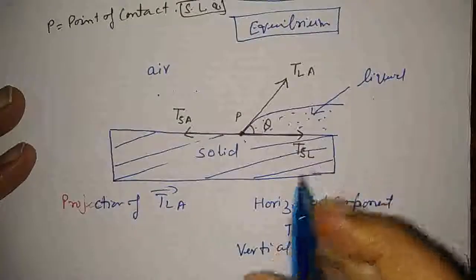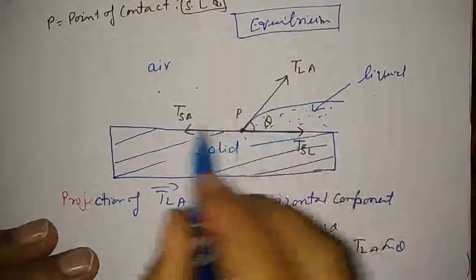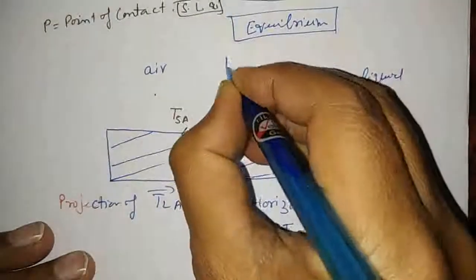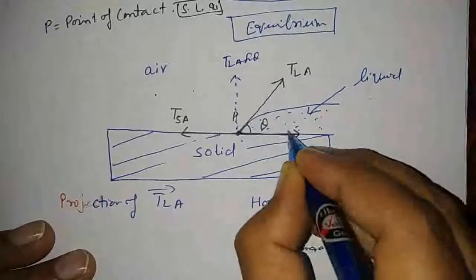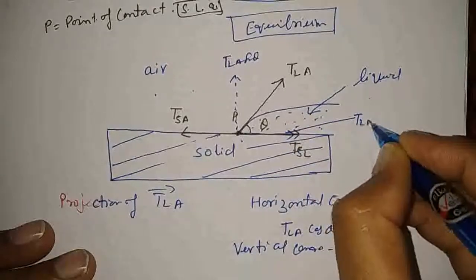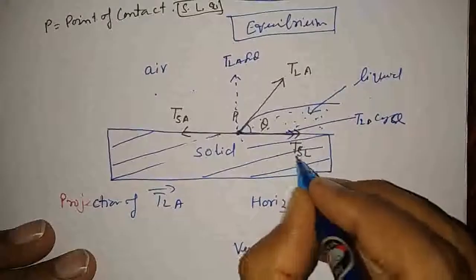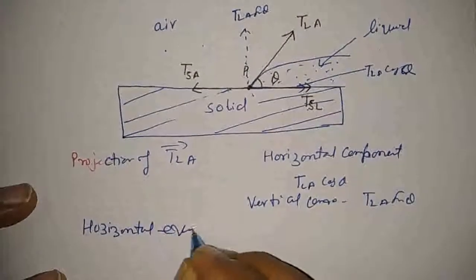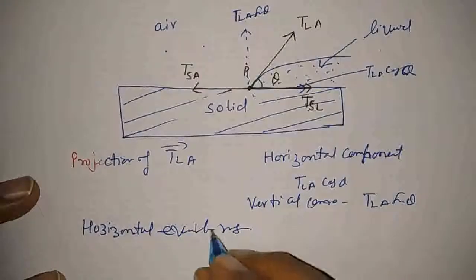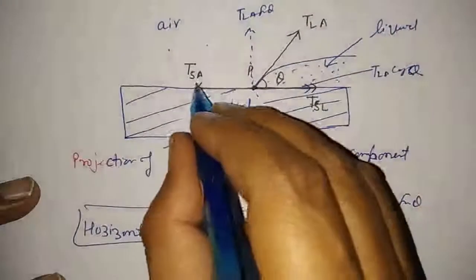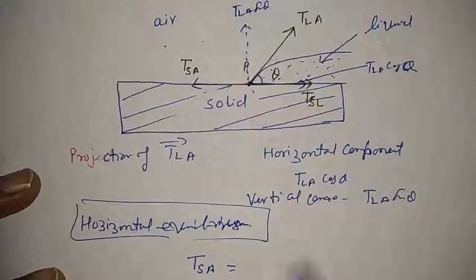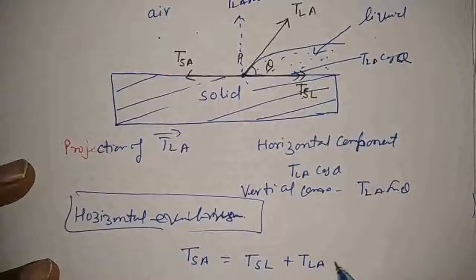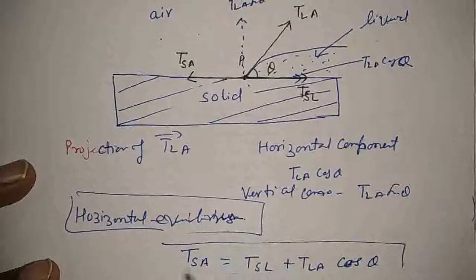Now see very carefully. This is the system in horizontal equilibrium. For horizontal equilibrium, T_LA sin θ acts vertically and T_LA cos θ acts horizontally. In the horizontal equilibrium equation: on the left-hand side T_SA is acting, which equals T_SL plus T_LA cos θ. This is represented by Equation 1. When we solve it, the expression becomes: cos θ = (T_SA − T_SL) / T_LA. This is Equation 2.